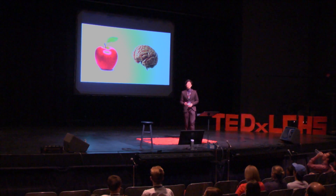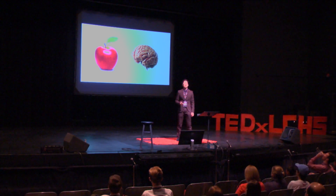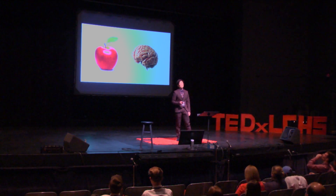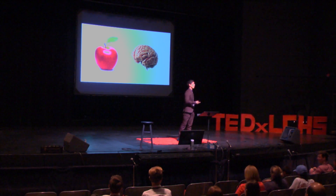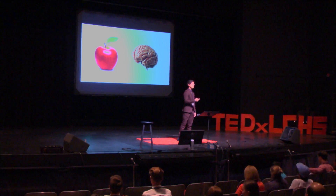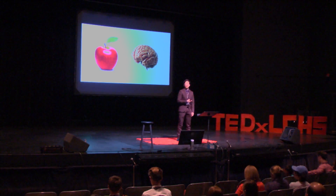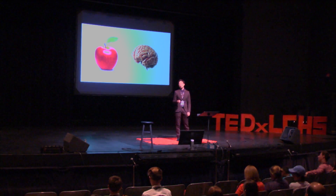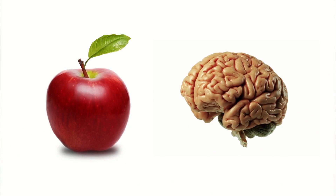An apple is created by an apple tree. The apple tree gets the instructions to create the apple from DNA. Likewise, the brain — the most complex system known to humankind — is created in the same manner. During our early embryonic stage, our DNA tells our cells how to create this brain.